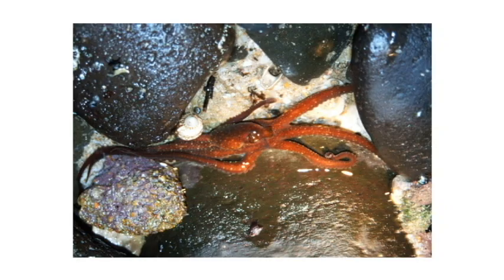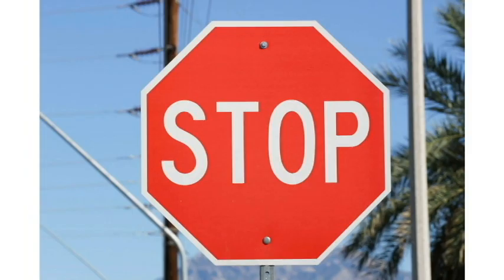For example, an octopus is an animal with 8 legs. An octagon is a shape with 8 sides.